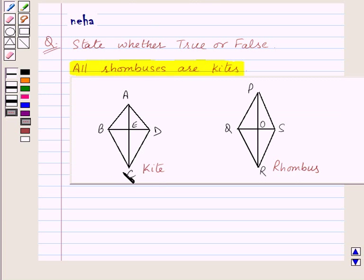Let us recall what is a kite. A kite is a quadrilateral with exactly two pairs of equal consecutive sides. That is AB is equal to AD and BC is equal to DC.